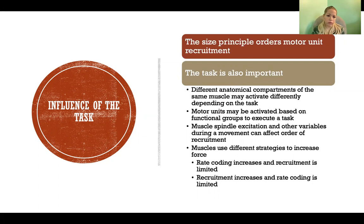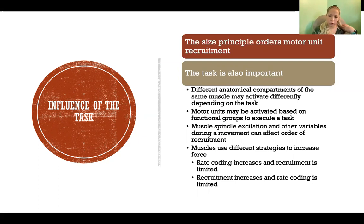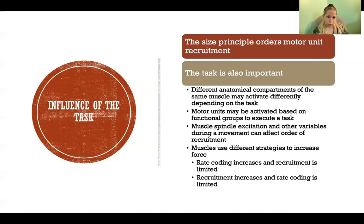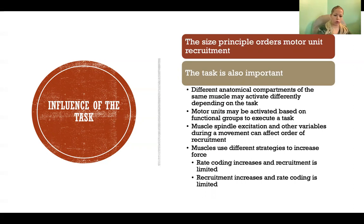Muscles use different strategies to increase force. Depending on the muscle in the body, some muscles will use rate coding to increase force as opposed to recruitment. In certain muscles we might activate the recruited motor units to a greater extent, but with a limit to how many motor units are recruited at any given time. Whereas in other muscles there might be a large amount of recruitment up to full capacity where rate coding is less utilized. Different muscles act preferentially in one direction — preferentially increasing rate coding versus increasing recruitment.